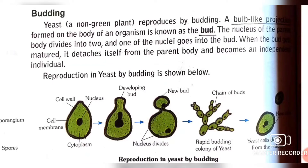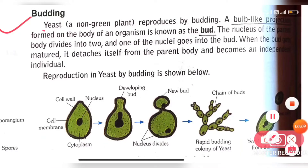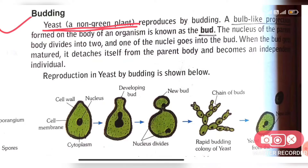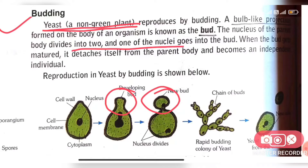The next method of reproduction is the budding method. Yeast, which is a non-green plant, reproduces by this method. In budding, a bud-like projection forms on the body of the organism. The nucleus of the parent body divides into two — one nucleus stays in the parent body and another part goes to that bud. When the bud gets matured, it detaches itself from the parent body and becomes an individual.